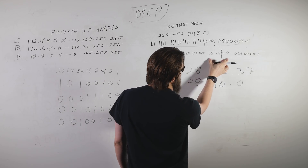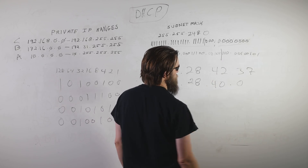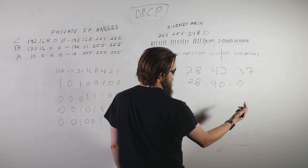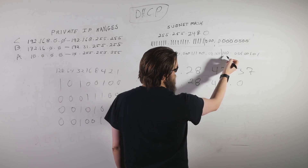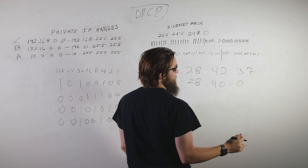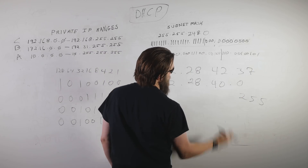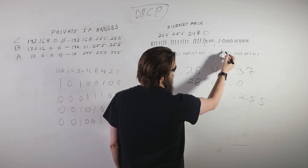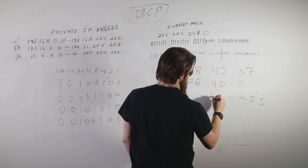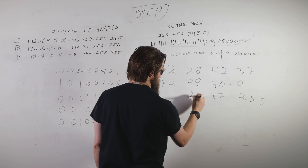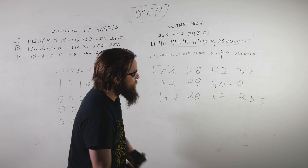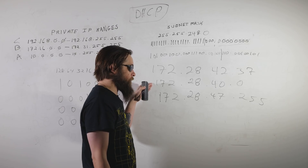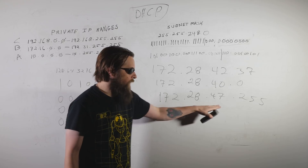We know the last three bits over in that octet are the host portion. The two's place gets subtracted, giving us the network of 172.28.40.0. The broadcast address uses all ones in the host portion — that's bits for four, two, and one, which equals seven — added to 40 gives 47. So the broadcast address is 172.28.47.255. This IP address 172.28.42.37 exists on the network 172.28.40.0 with a broadcast address of 172.28.47.255.